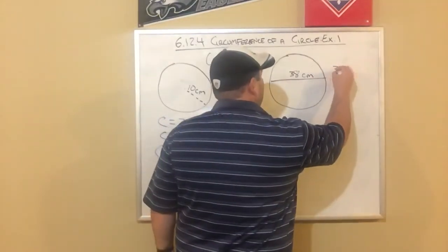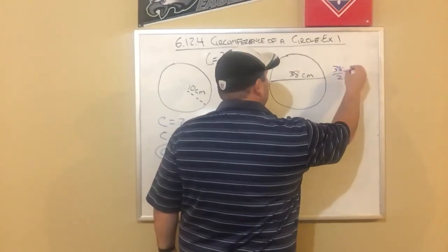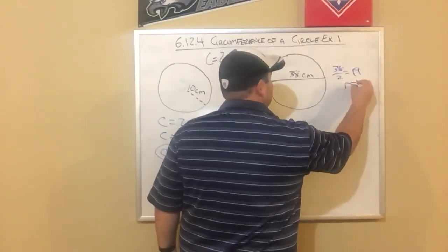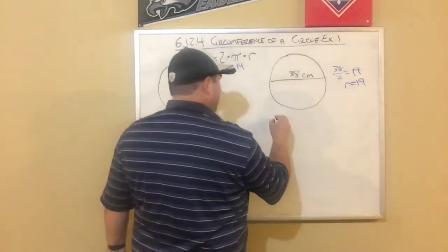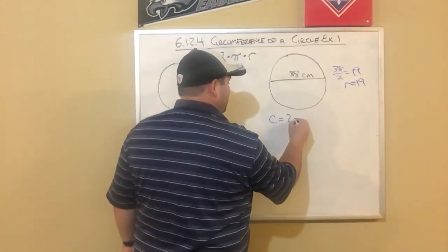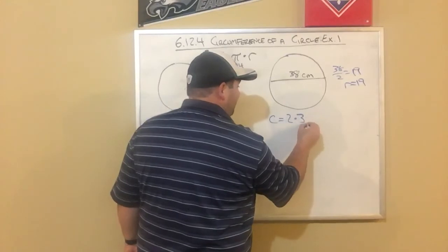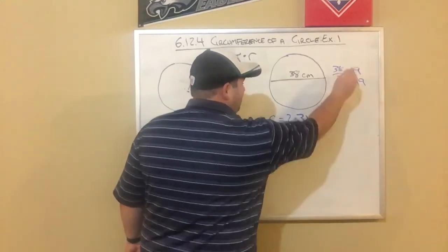it's easy to figure out the radius because all you got to do is divide the diameter by 2. So if I do 38 divided by 2, I figure out my radius is 19. Now I can use my formula. So C equals 2 times pi, but in place of pi, I put 3.14 times 19.